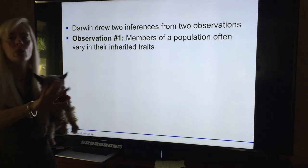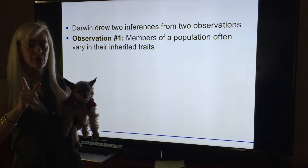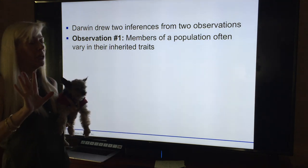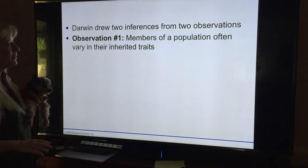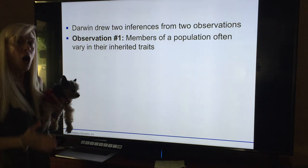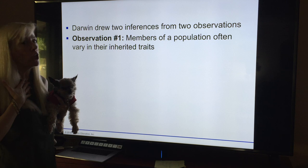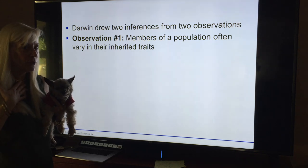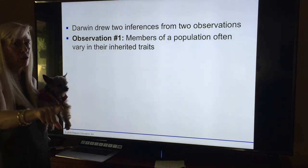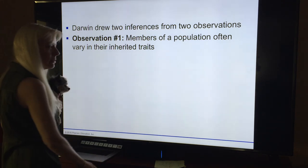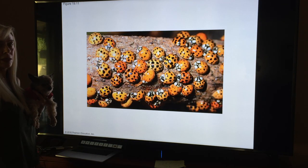Here are Darwin's observations — do not memorize them, understand the concept. No one is going to ask you 'what was observation number three?' But you need to see how the process worked. Observation one: members of a population often vary in their inherited traits. No variations — if you don't remember how variations occur, go back and look at meiosis.